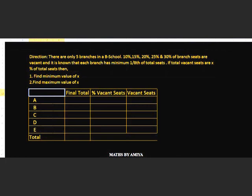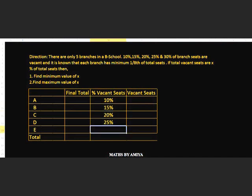I have created a matrix or table to solve this question and to understand it in the best way possible. I have given names A, B, C, D, E for the five branches. Now I plot all the values in this table: A is 10%, B is 15%, C is 20%, D is 25%, and E is 30% vacant seats.